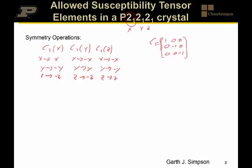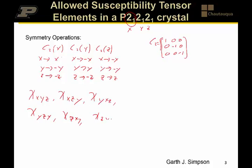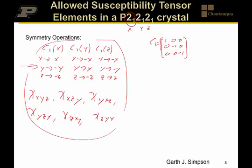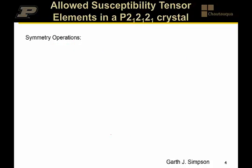If you ask yourself what combinations of three tensor indices x, y, and z will result in a positive sign for every one of these symmetry operations, you can convince yourself that there are only six. Those are: chi_xyz, chi_xzy, chi_yzx, chi_yxz, chi_zxy, and chi_zyx. Those are the set that survive that collective set of symmetry operations. You can arrive at these empirically by inspection, but there is also a more rigorous way to come up with this rather than by trial and error, going back to the actual symmetry operations themselves.